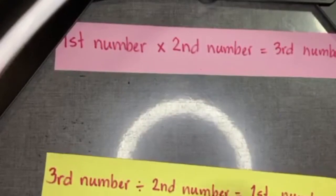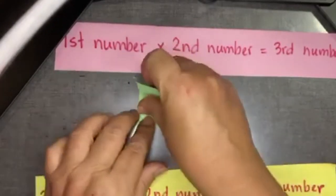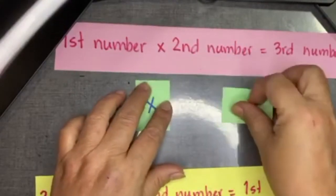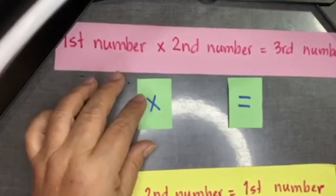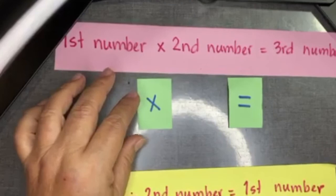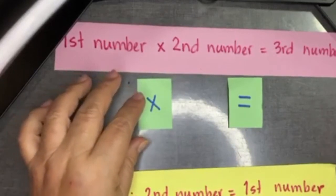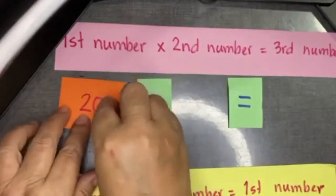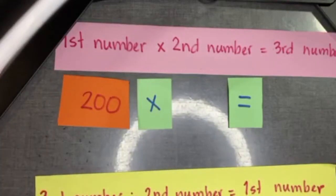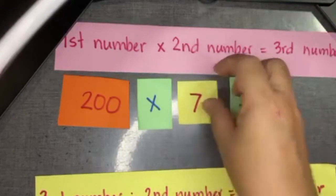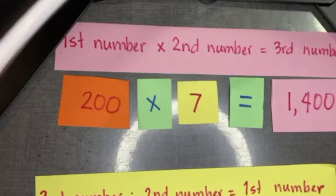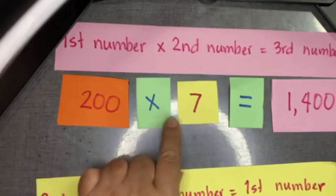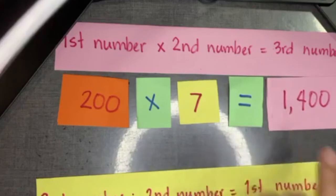Another example — we will have bigger numbers. The first number is two hundred, the second number is seven, and the third number is one thousand four hundred. So we have two hundred times seven equals one thousand four hundred.